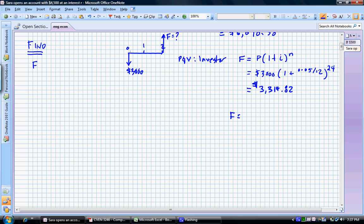Remember our total F is going to equal the sum of the two, which is $6,070.58 plus $3,314.82, and that's going to equal a final amount of $9,385.40, which is the final future value of that account.